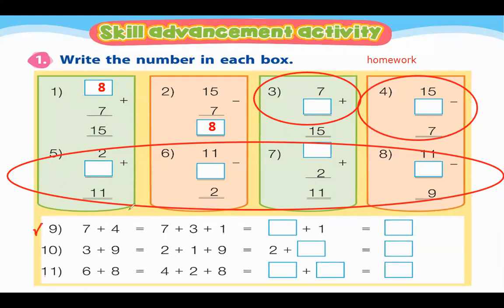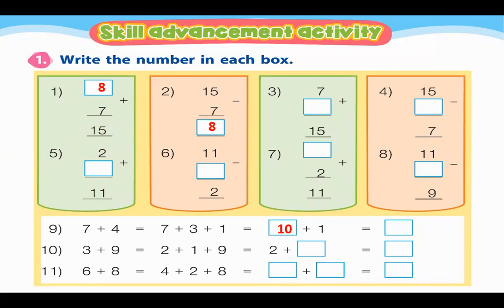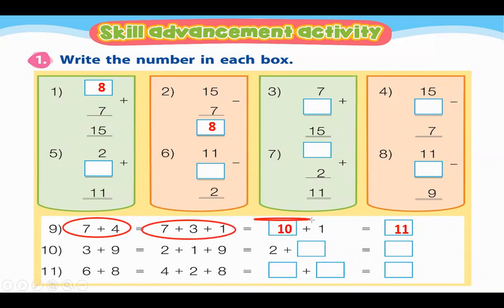Next, number 9: 9 plus 7. Another way of finding the addition is: 7 plus 4 equals 7 plus 3 plus 1, which equals 10 plus 1 equals 11. So you distribute it: 10 plus 1 equals 11. The result is 11, and 10 plus 1 is also 11. So make sure both answers match at 11.